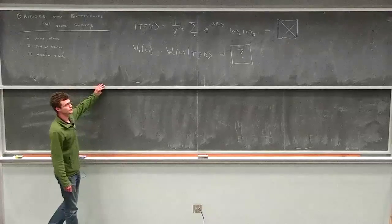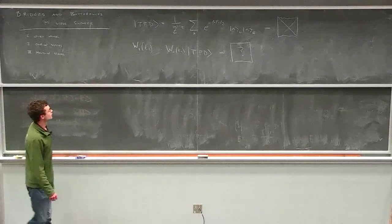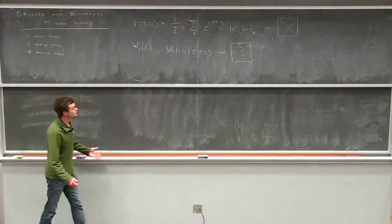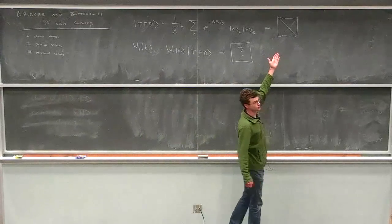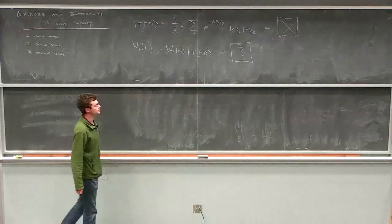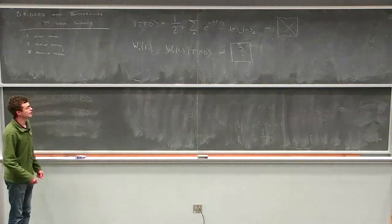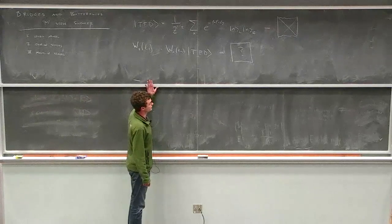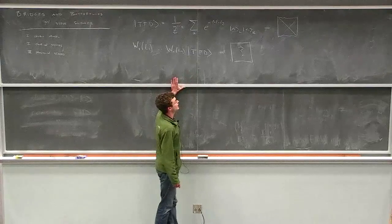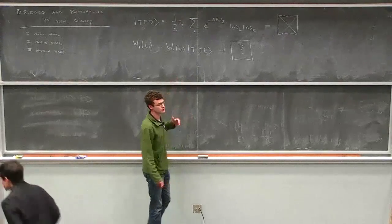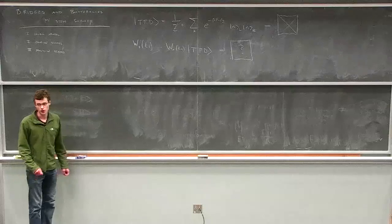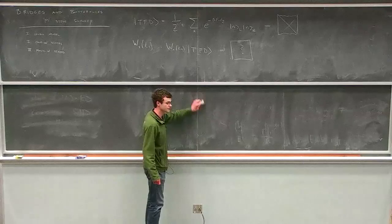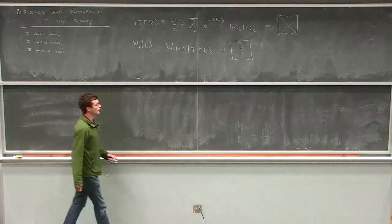A first thought Steve and I had: since these operators change the energy by an amount of order one, they don't back-react very much. We might think the dual geometry should just be the thermofield double geometry, up to corrections of order G_Newton or 1/N^2. Most of the talk will be about why that's not the right answer. It's possible to get a hint of that without using the bulk dynamics at all, just by assuming chaos in the dynamics of the CFT.